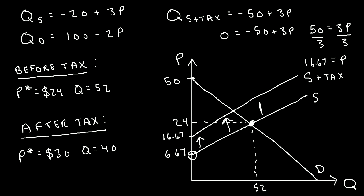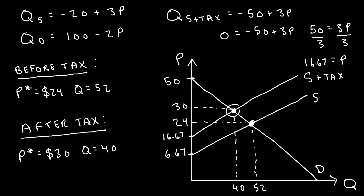Every point on the original supply curve is shifted up by 10 units. After this tax, the new equilibrium quantity — where the original demand curve intersects the new supply curve — is 40 units. The new equilibrium price is 30. We can see that after the tax, the shifted supply curve caused the market equilibrium price to increase from $24 to $30, and as a result, the market equilibrium quantity decreased from 52 to 40 units. At a higher price point, fewer consumers are interested in buying that good. That is how you calculate market equilibrium quantity and price before and after a tax has been imposed.